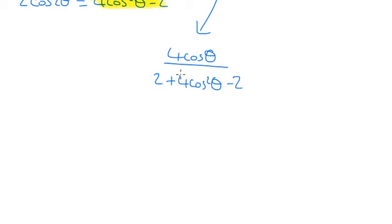So hopefully you can see what's going on now, these 2's are going to cancel, and the 4's are going to cancel, and we've got cos theta over cos squared theta. One of the cos's are going to cancel, which is 1 over cos theta, which is sec theta.